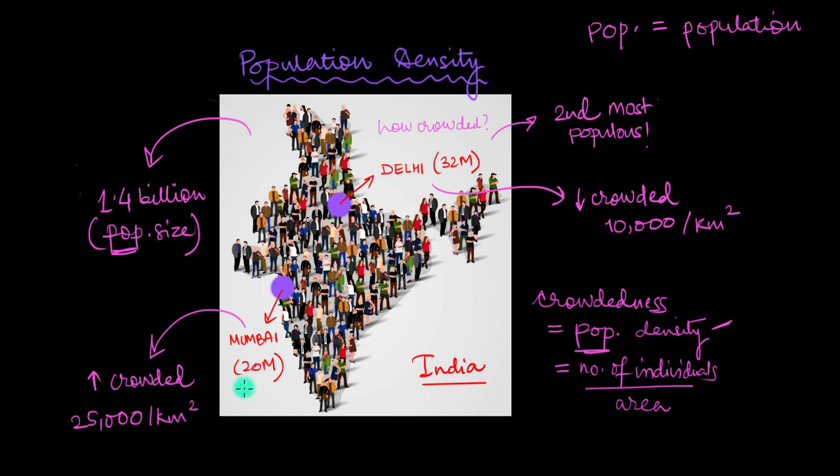The population size of Mumbai is 20 million but it is way more crowded than the population of Delhi which is about 32 million. The population density in Mumbai is 25,000 people per kilometer square compared to Delhi which is a measly 10,000 individuals per kilometer square.